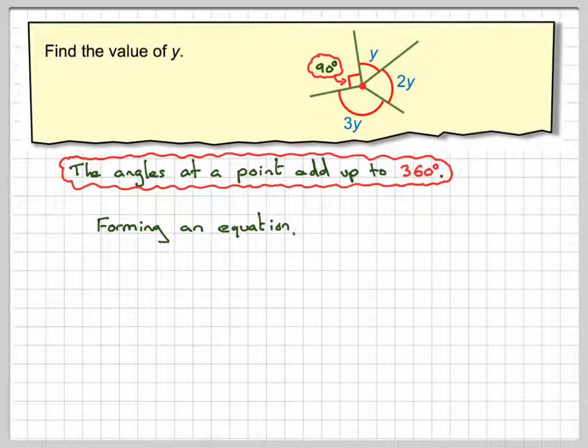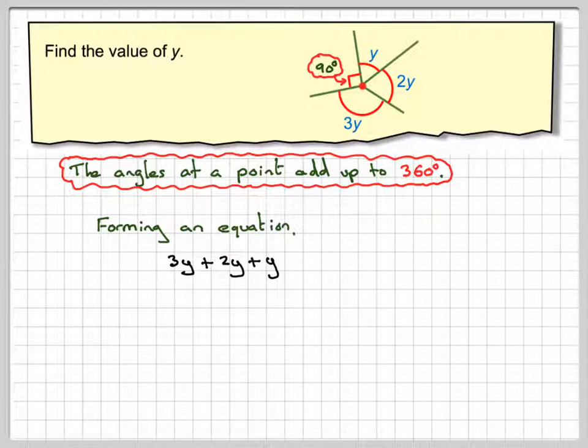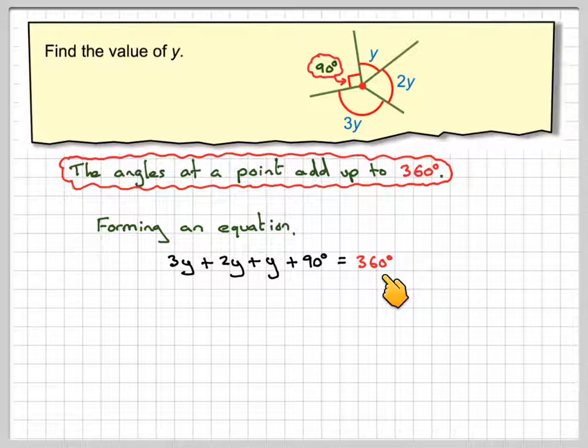And then forming the equation, we have 3y plus 2y plus y plus 90 degrees must be equal to 360.